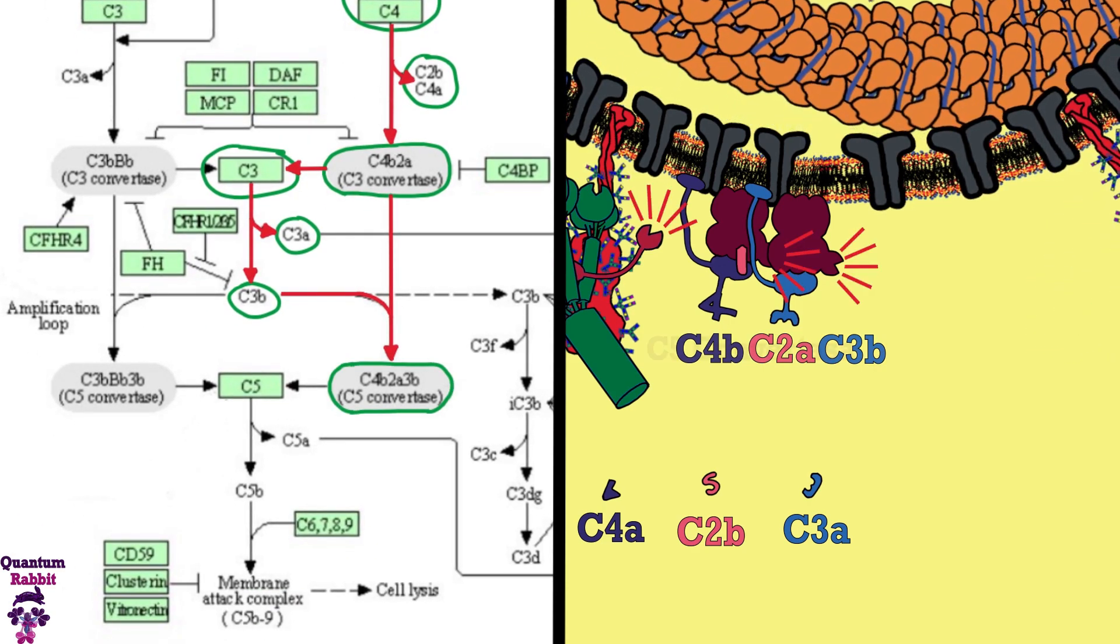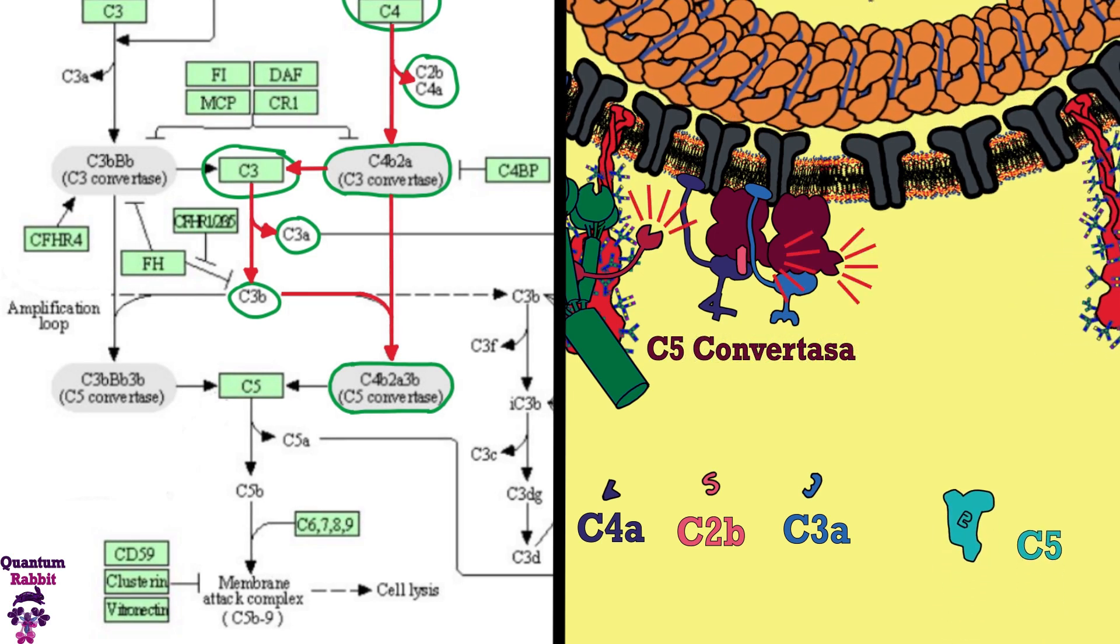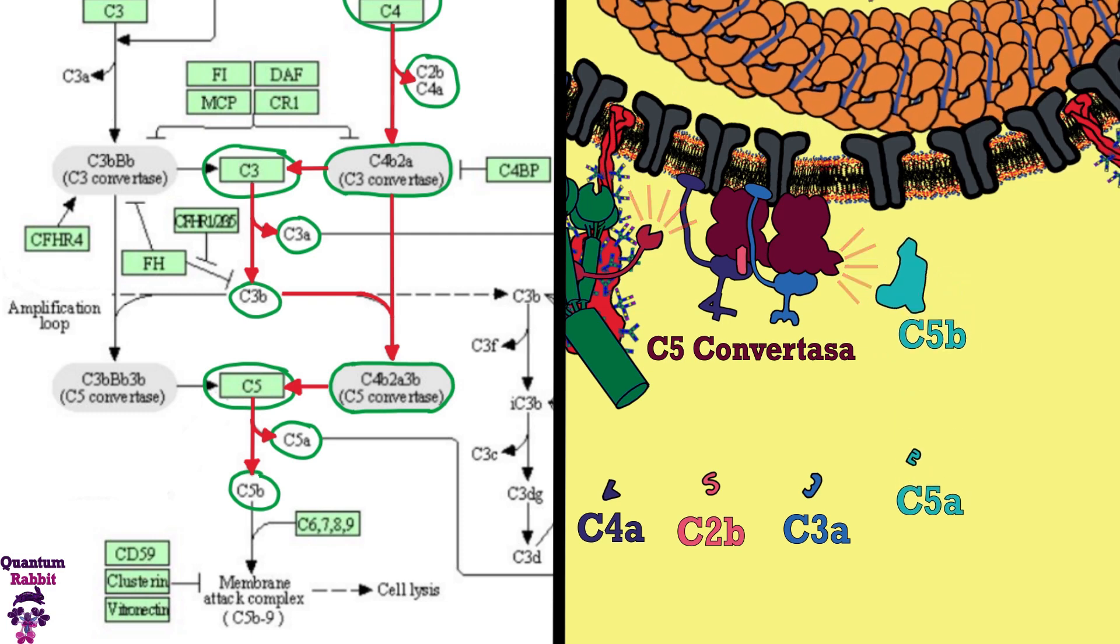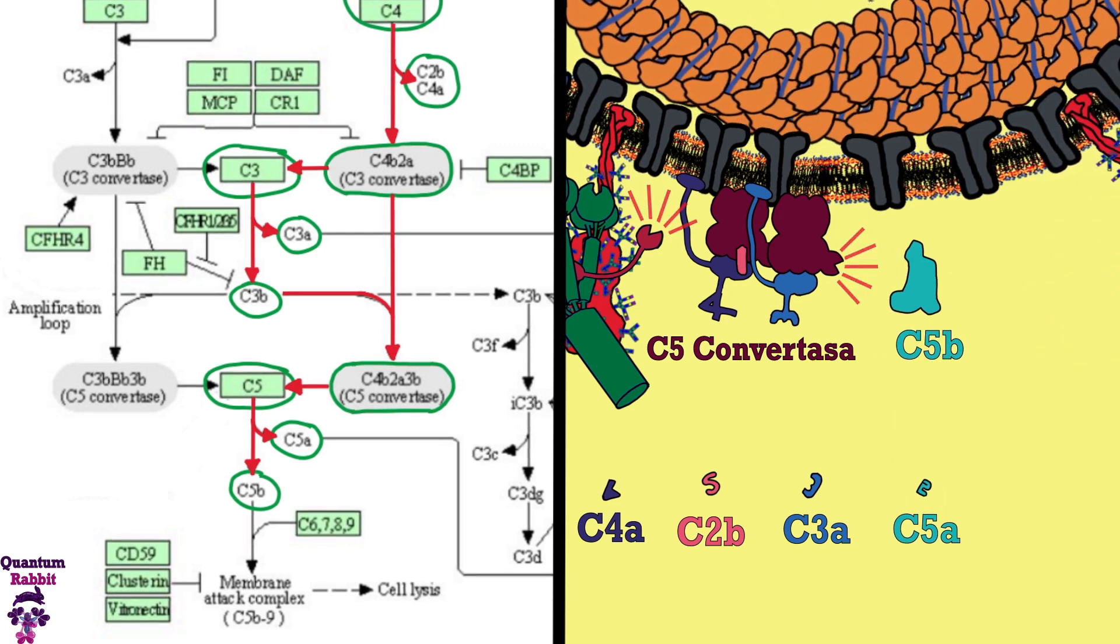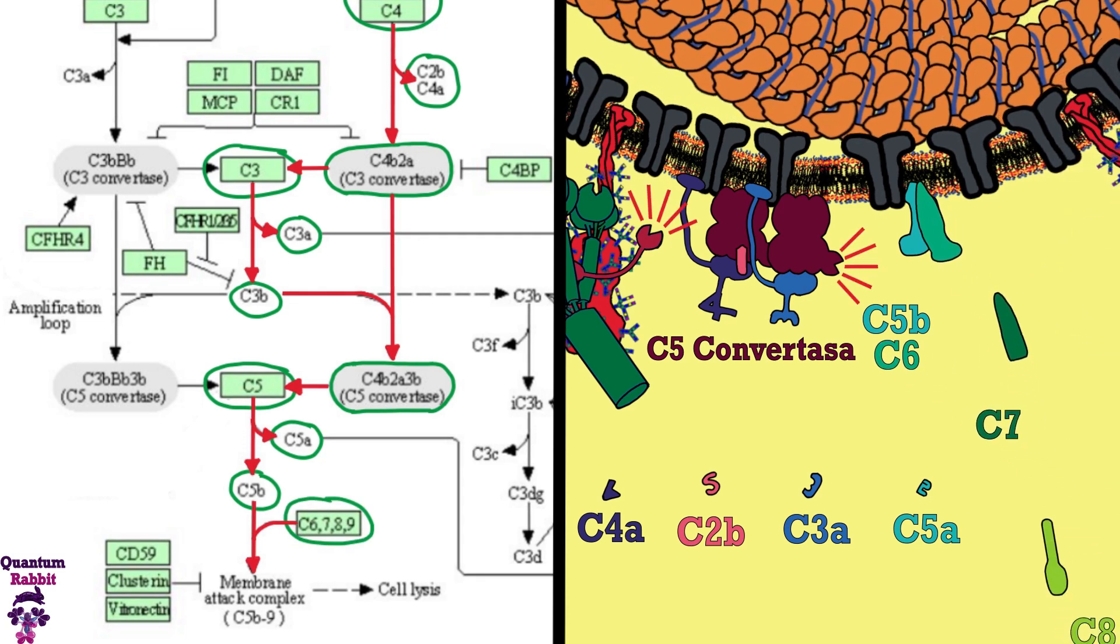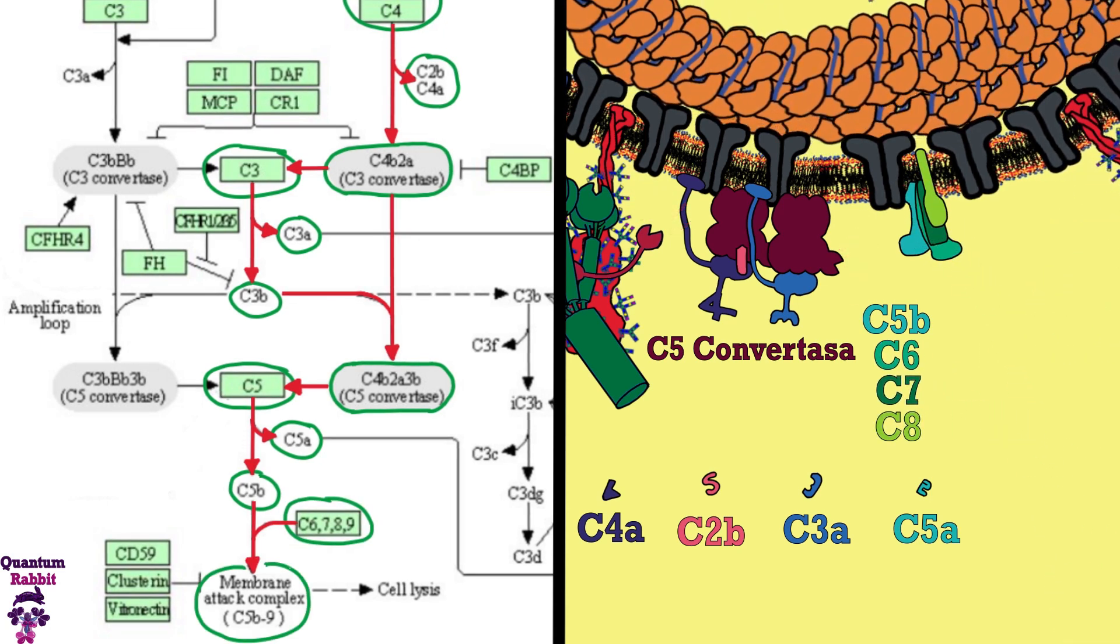C5 convertase begins to massively hydrolyze the C5 proteins into two parts, C5a and C5b. C5b inserts itself into the membrane of the virion and binds with the proteins C6, C7, and C8 to form a protein complex.